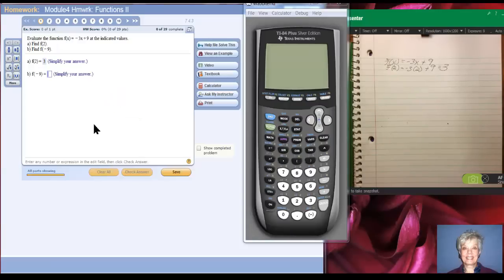Okay, this time we're going to use the calculator. f of negative 9 means take negative 9 and put it in for every x. So I'm going to turn on the calculator. I'm going to clear. I'm going to say negative 3 times negative 9 plus 9. Enter. And the answer is 36. Let's see if we're right. Yes, we are.